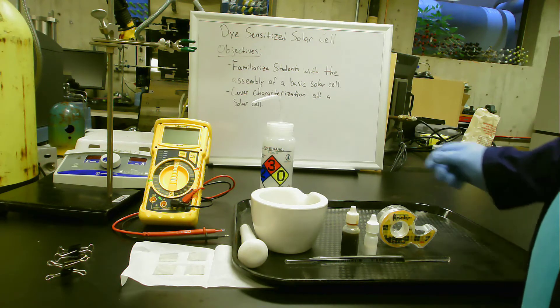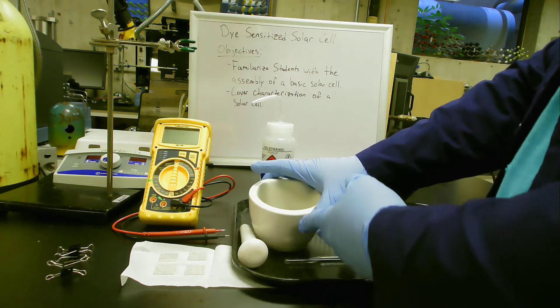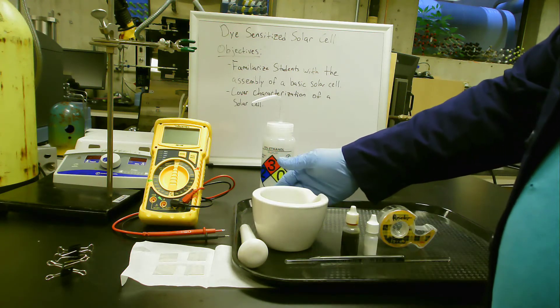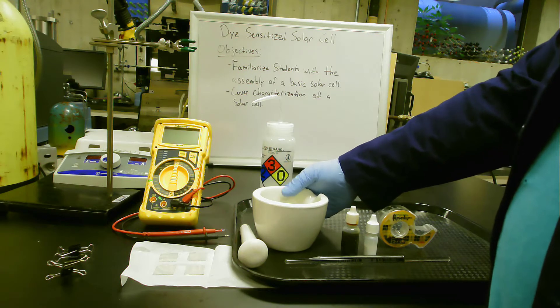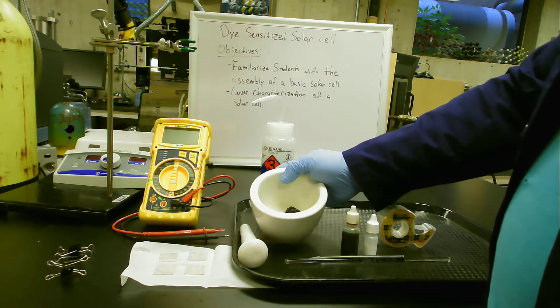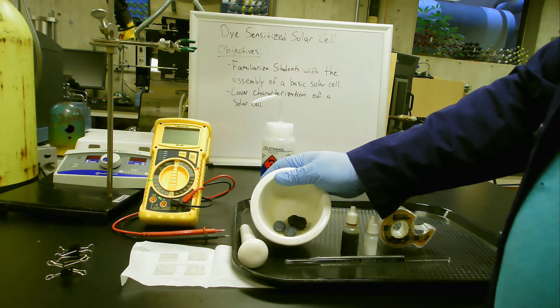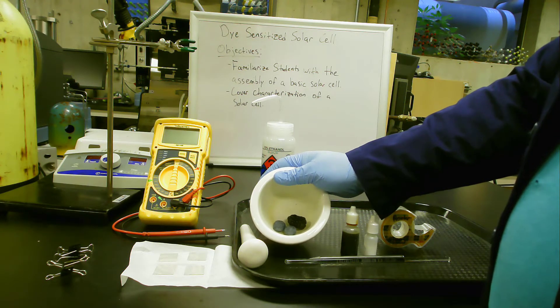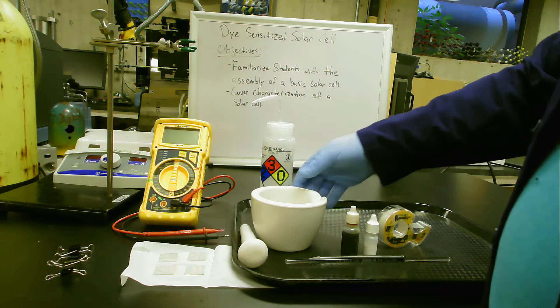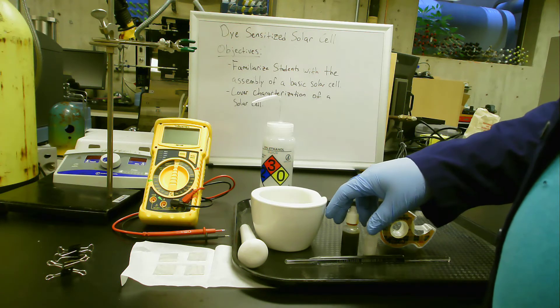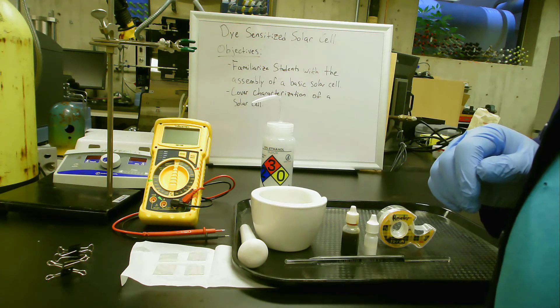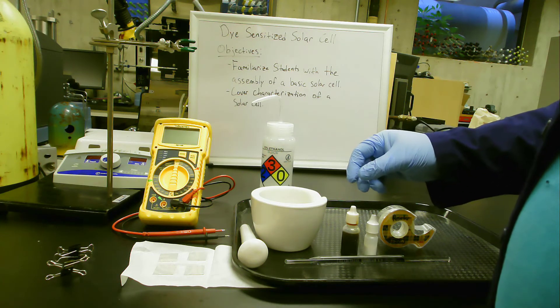We also have a mortar and pestle, which is used in our biodiesel experiment. This is a bit larger. We're going to use it to grind up our berries. We have a couple berries in there—two blueberries and a blackberry. You can also use raspberries, but never strawberries; they do not work for this. This is what we're going to use to make the dye that will sensitize our solar cell.